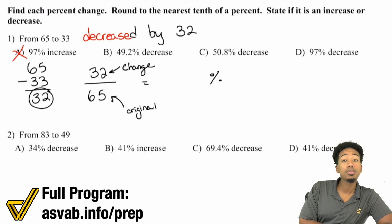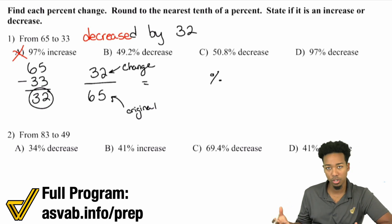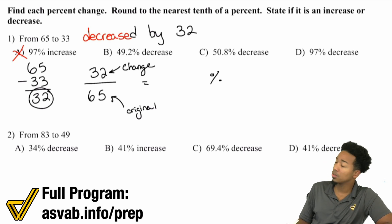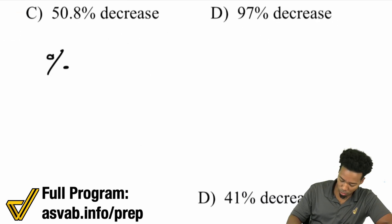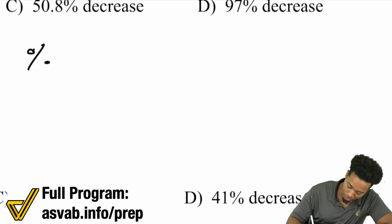That's going to equal your percent change. When you divide the change by the original number, that gives you the percent of the change. Remember, when you divide, that's going to be a decimal. To get from a decimal to a percent, move that decimal place to the right two times. Here we go, 32 divided by 65.